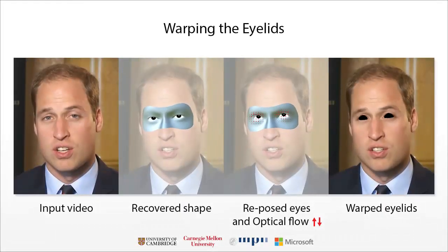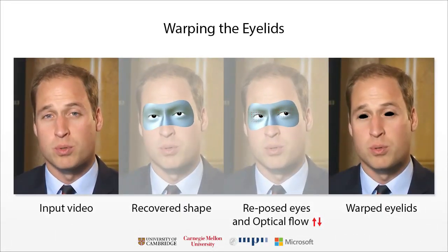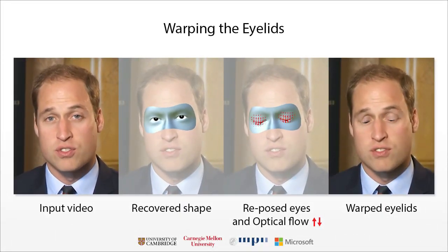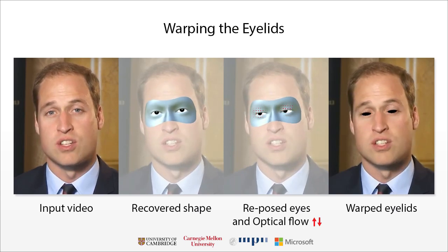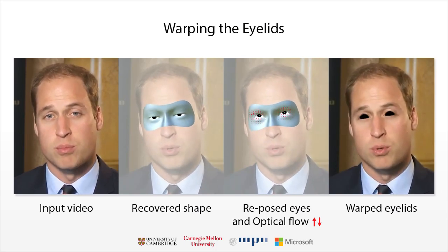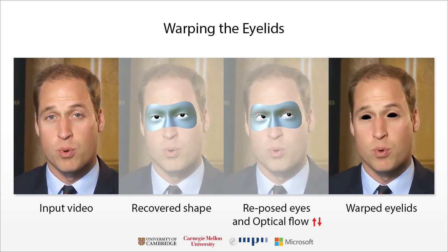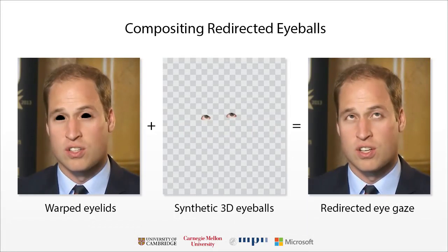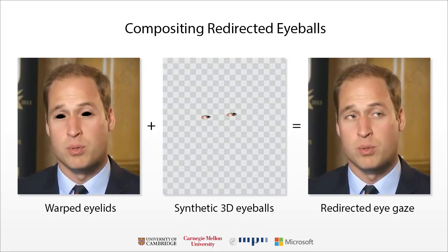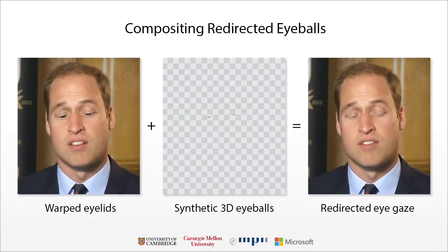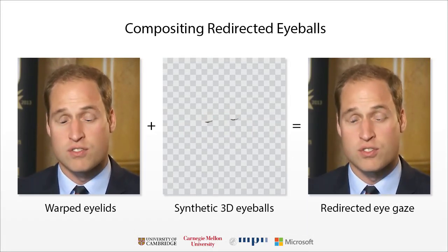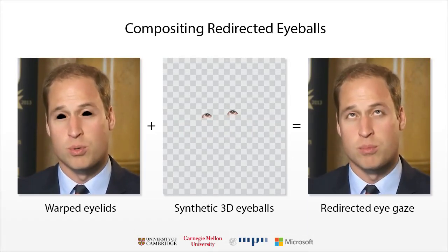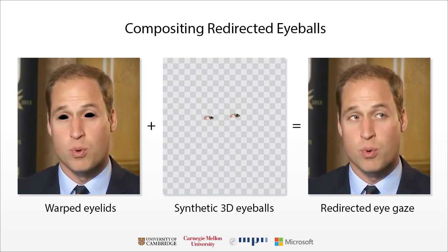We redirect gaze in two steps. We first warp the eyelids from the original image using model-derived optical flow. We then render our reposed synthetic 3D eyeballs and composite them back onto the image in a photorealistic manner.